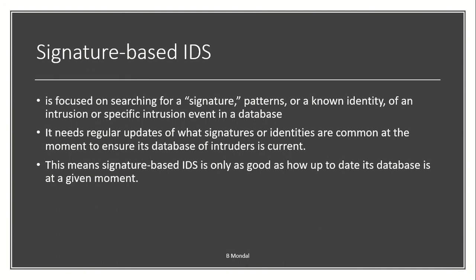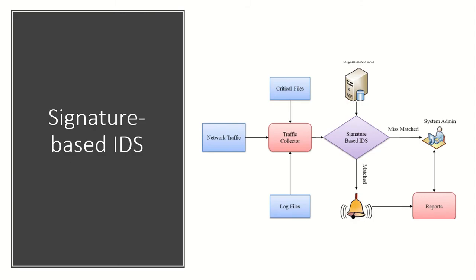Looking at the flowchart — network traffic is coming, meaning some attacker is sending a request or packet. It first comes to a traffic controller which maintains the log file as well as the critical file. It then sends to the signature-based IDS, which has a signature database. It checks whether the signature matches the database or not. If matched, it reports a positive and allows the request. If it doesn't match any signature, it alerts the system admin.